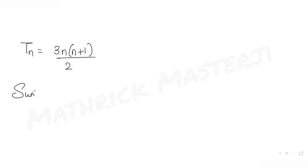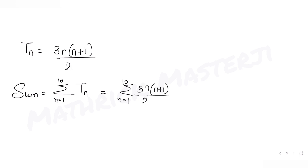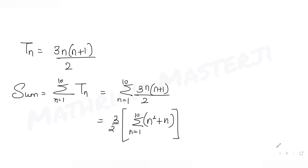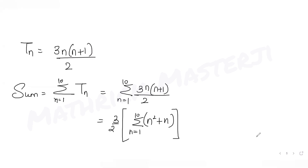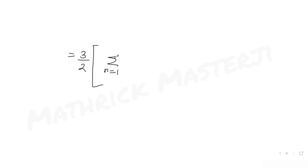To find the sum of the first 10 terms, we compute the summation from n = 1 to 10 of 3n(n+1)/2. Taking 3/2 outside, we need the summation from n = 1 to 10 of (n² + n), which splits into: summation of n² plus summation of n.